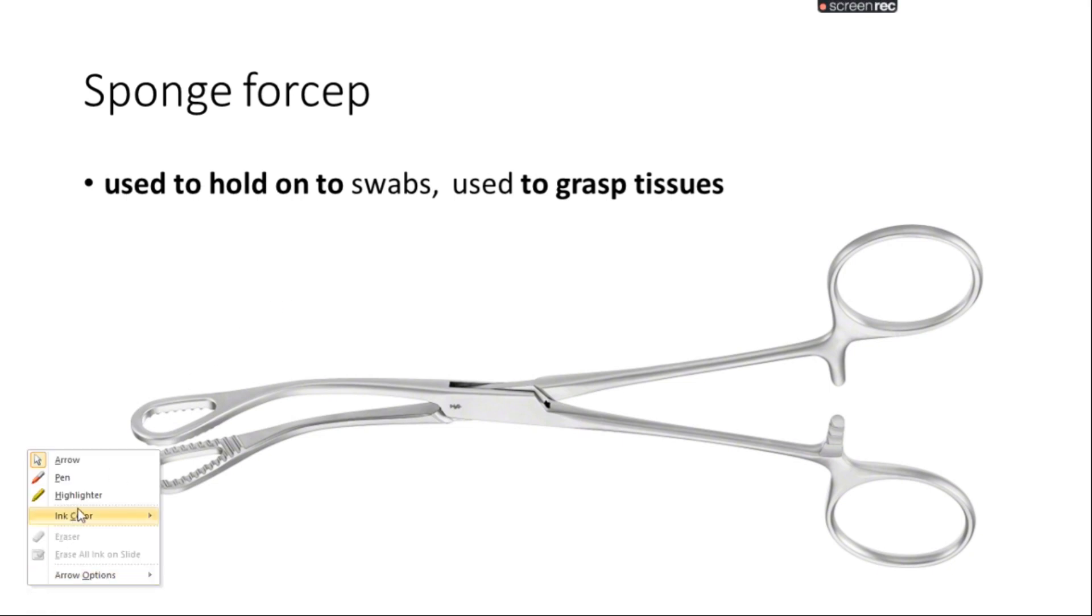Sponge forceps are used to hold swabs and to grasp tissues as well. Swabs like cotton swabs, whenever we have to wash some material, wash certain skin or surface, we use sponge forceps to swab that particular area.